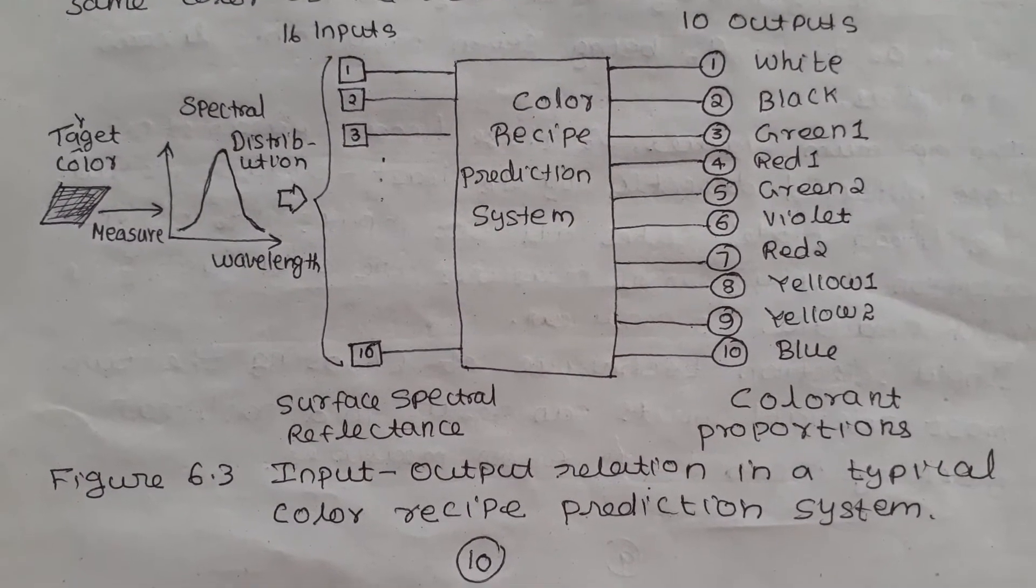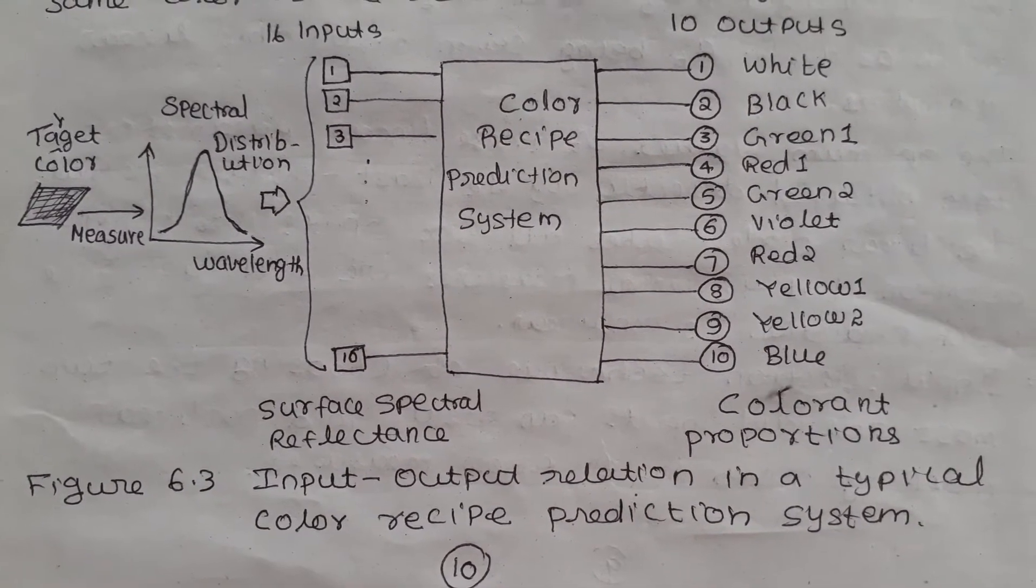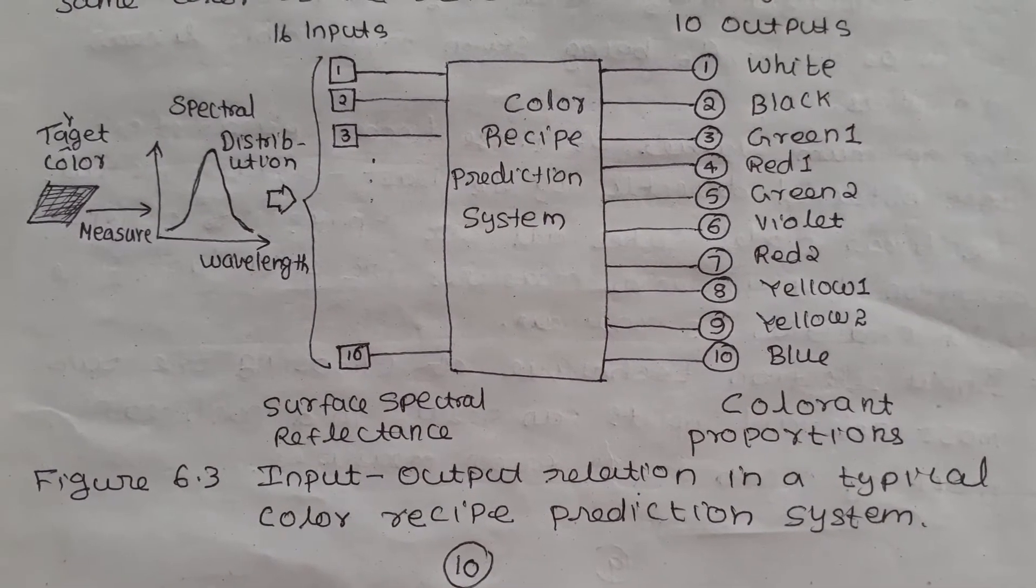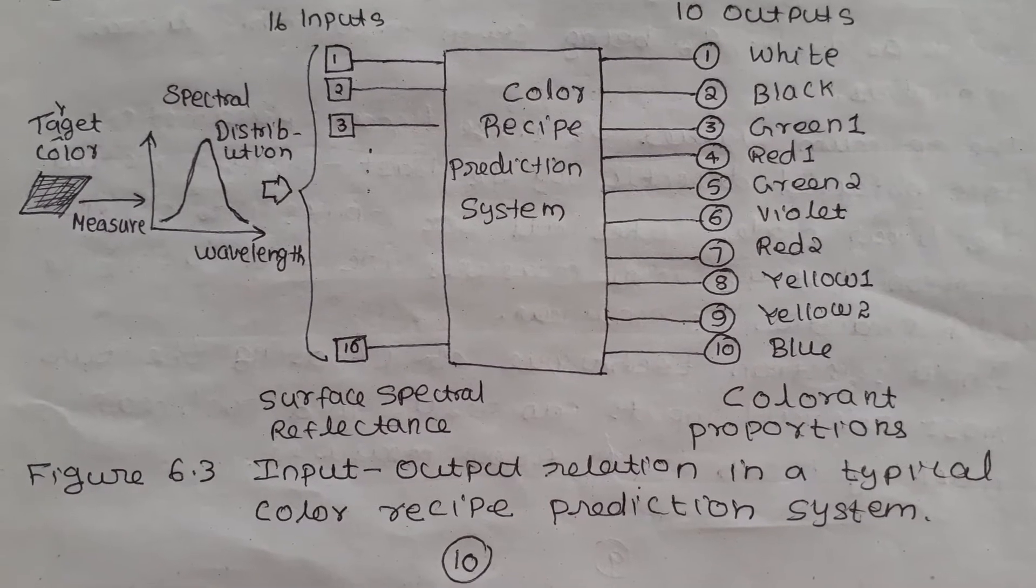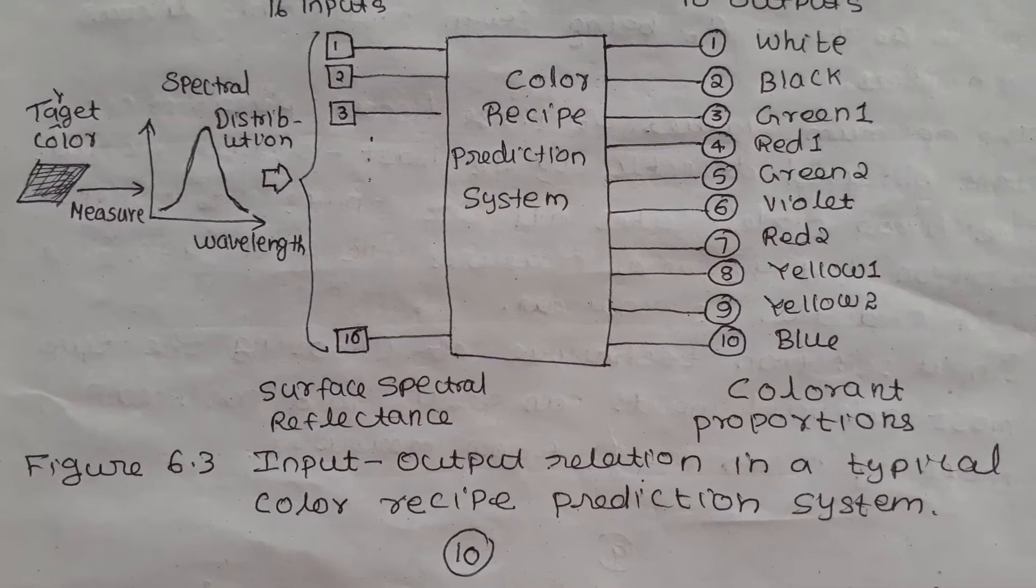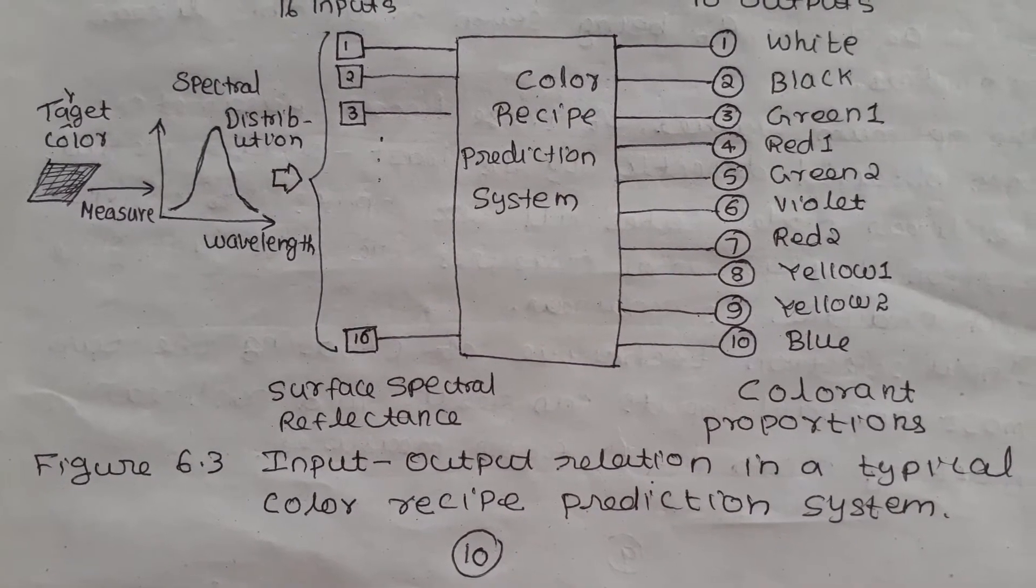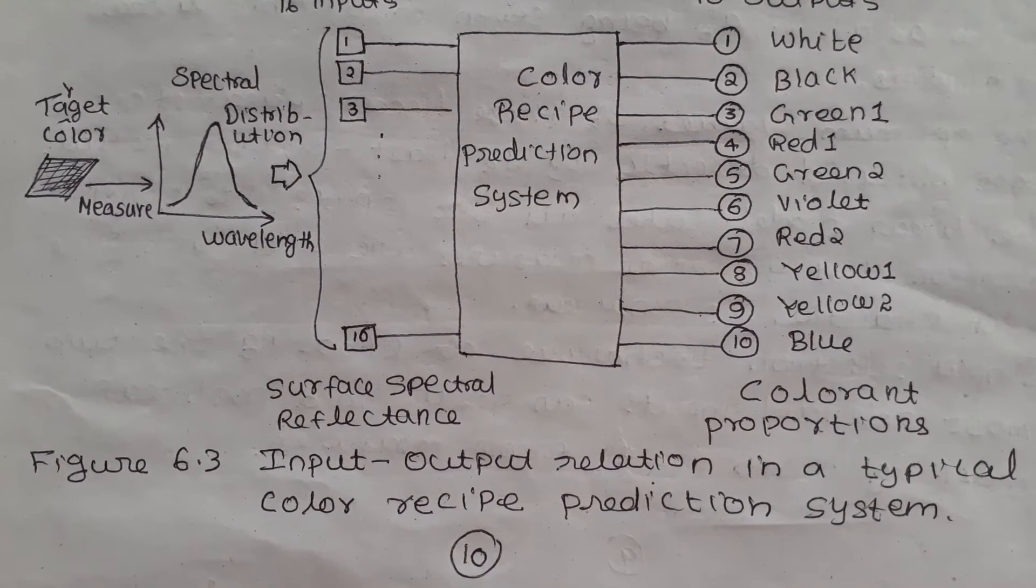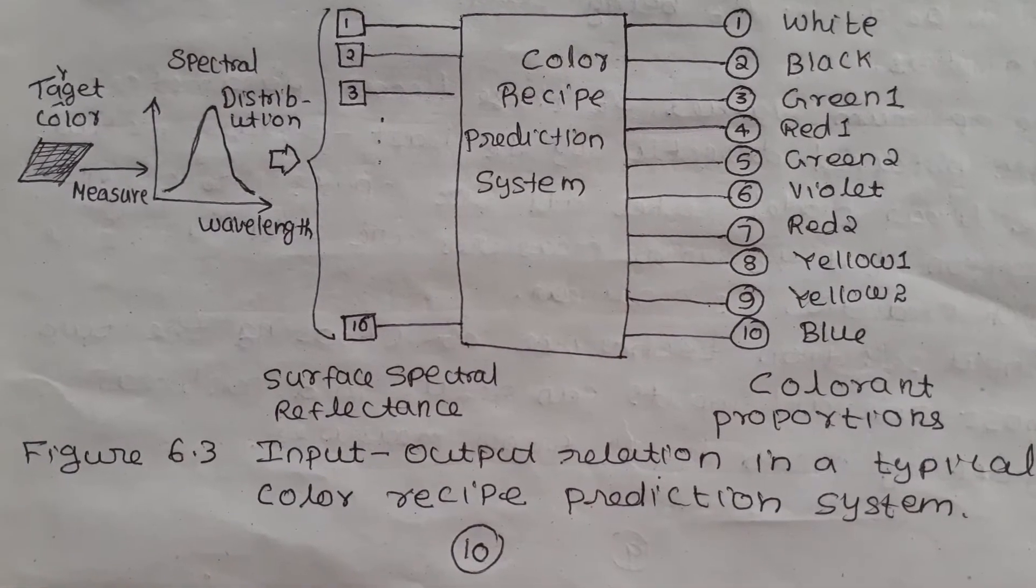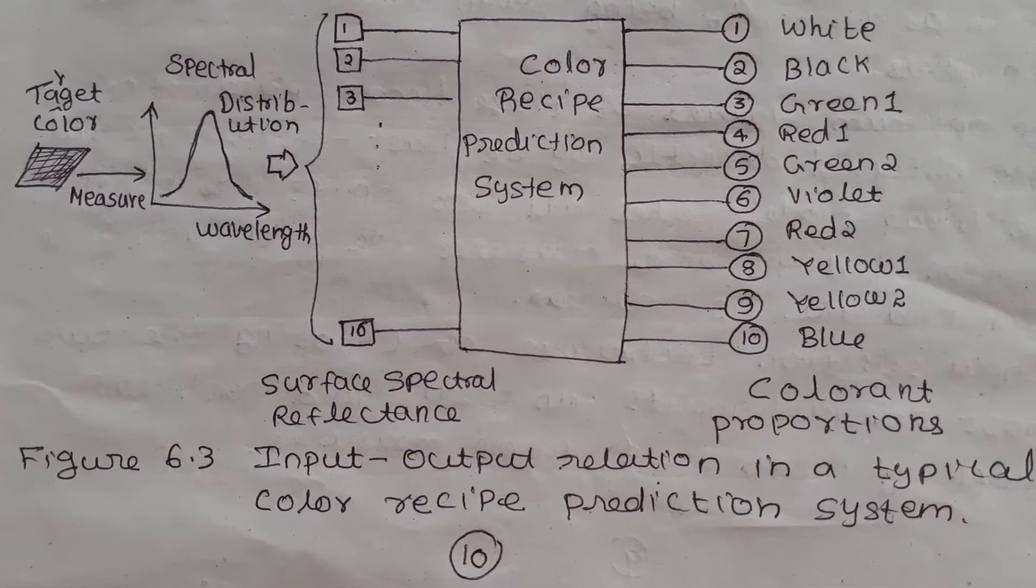How to predict color? In a practical situation, it is necessary to examine the color match in daylight as well as in artificial light. Color recipe prediction relates the surface spectral reflectance of a target color to a list of several required colorant proportions that are needed to produce the same color as the reference color.